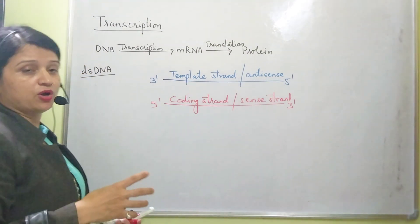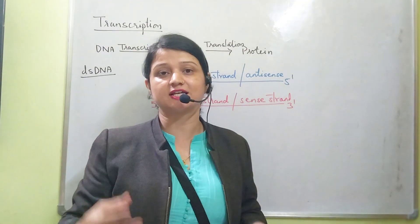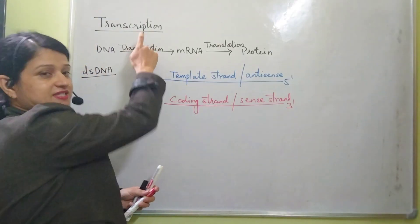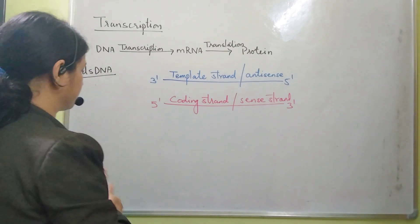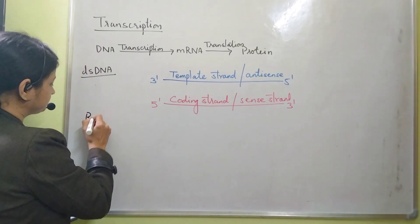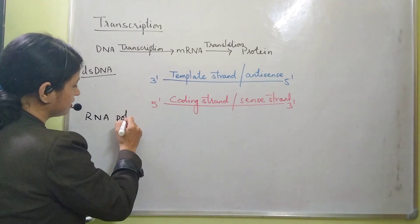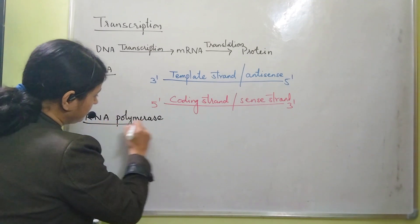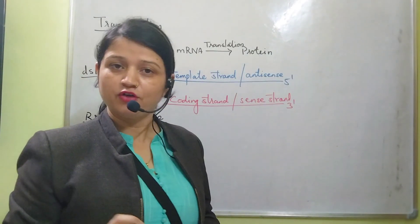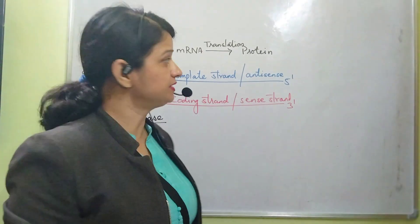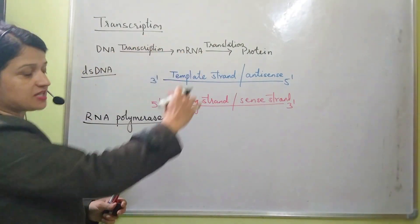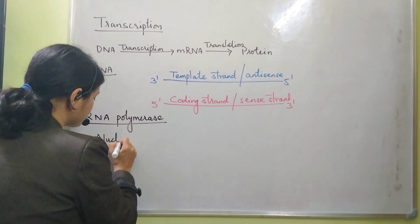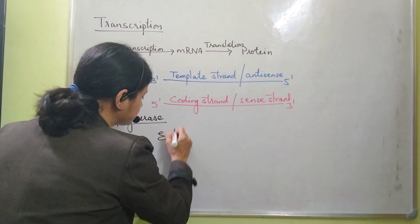The main enzyme required for the process of transcription is RNA polymerase. This RNA polymerase is the main enzyme for transcription, and this process takes place in the nucleus of a eukaryotic cell.